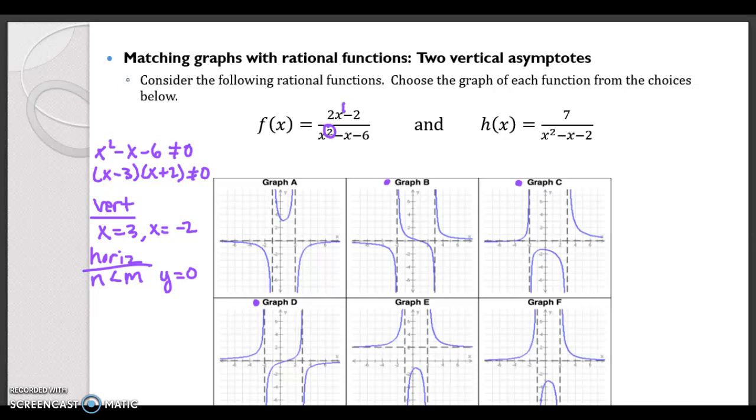But what is the y-intercept of f of x? Remember the y-intercept happens where x equals 0 so that's going to be at 2 times 0 minus 2 over 0 squared minus 0 minus 6